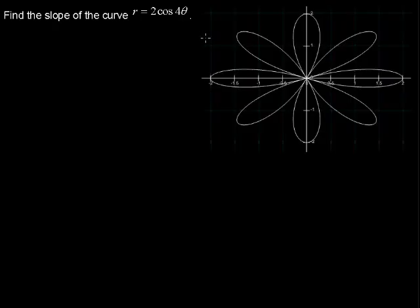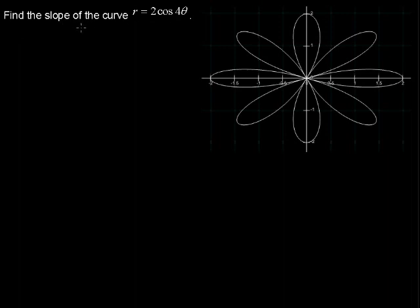In this video, I'll discuss how to take the derivative of a polar curve. Here we have the curve r equals 2 cosine 4 theta, and we're asked to find the slope of that.